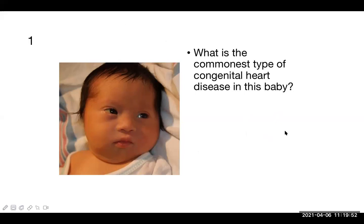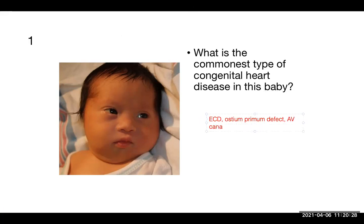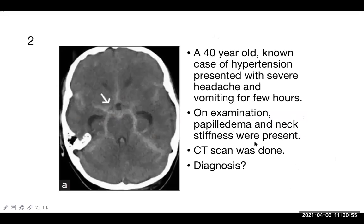Endocardial cushion defect is also known as ostium primum defect or atrioventricular canal defect — three synonymous terms used in different textbooks. This is considered a serious type of congenital heart disease. It may lead to heart failure and repeated chest infections. So the answer is endocardial cushion defect.